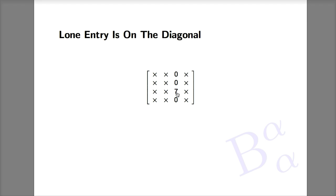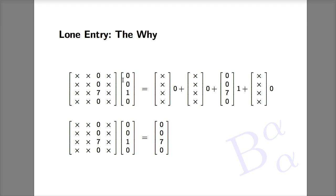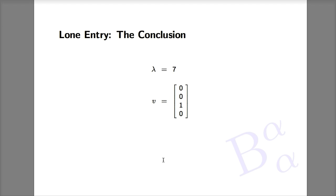Let's see why that is. If we multiply this matrix by the vector [0, 0, 1, 0], it will effectively pick out the third column of the matrix, and the result will be [0, 0, 7, 0]. Now comes the eigenvalue question: is the result a multiple of the input vector? The answer is yes — it is precisely seven times the input vector. We therefore conclude that seven is an eigenvalue and [0, 0, 1, 0] is an eigenvector.